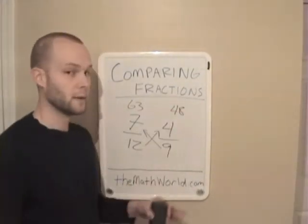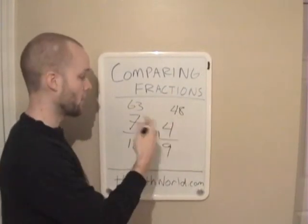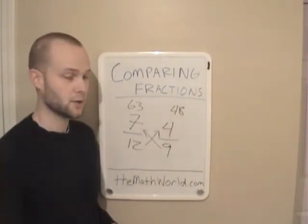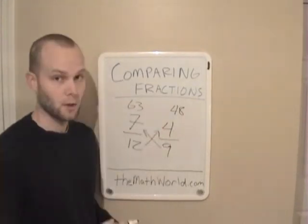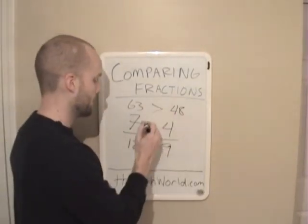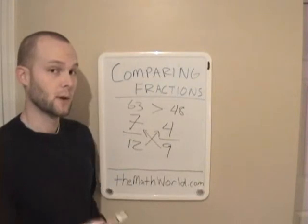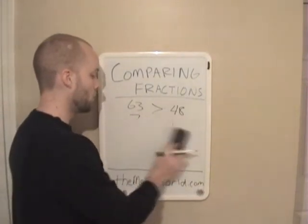Now these numbers don't equal anything. None of these fractions equal. These numbers are arbitrary, but they do tell us which fraction is bigger. And since 63 is larger than 48, then seven-twelfths also is greater than four-ninths. So we'll do one more.